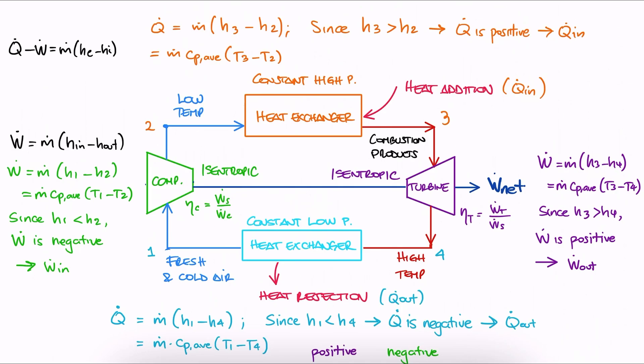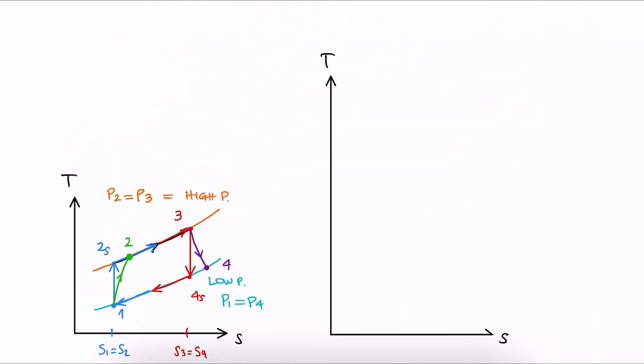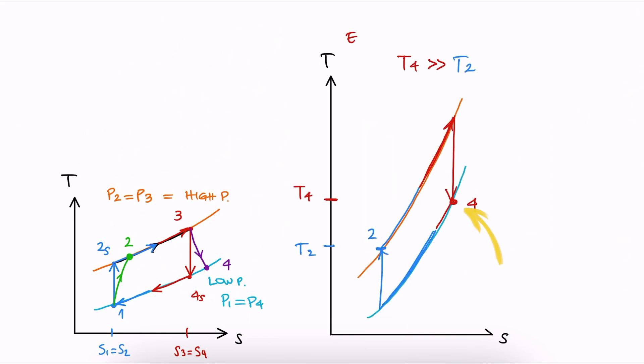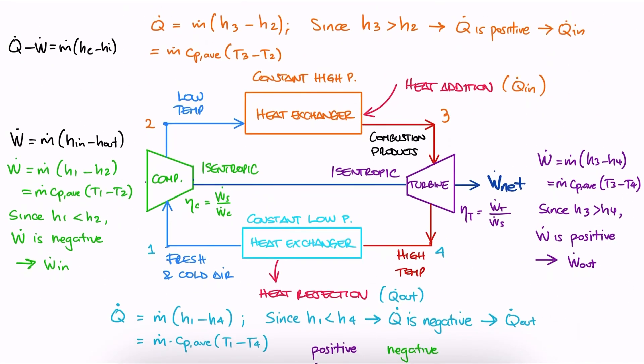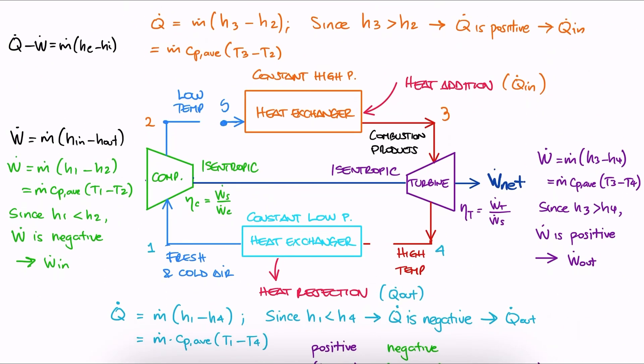A regenerator is basically a heat exchanger. In reality, the temperature at the exit of the turbine is still much higher than the exit temperature of the compressor. So the regenerator supplies the gas with some heat before going into the heat exchanger after leaving the compressor.